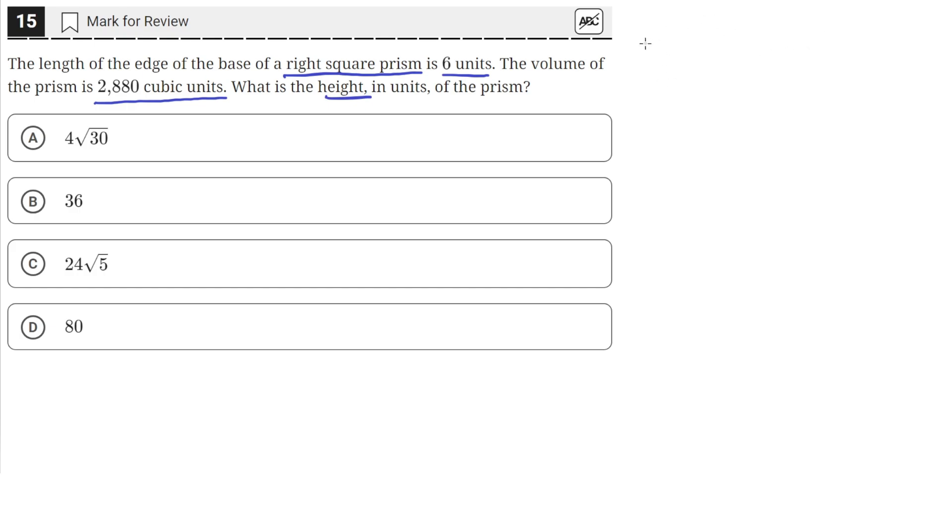So we have a right square prism, which means that the base or the top of the prism is a square.